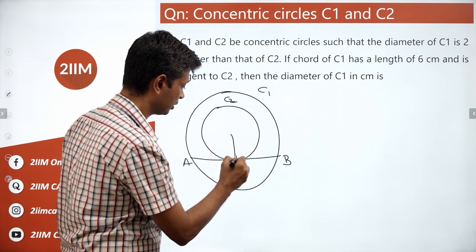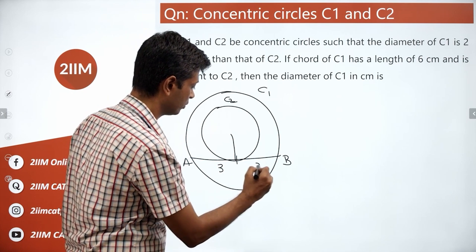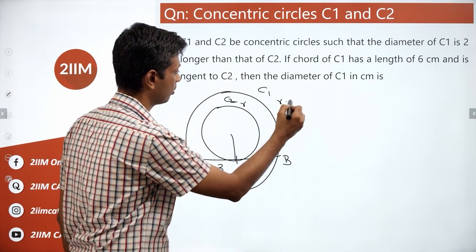The point of tangent C will be perpendicular. It's concentric, this is 3, this is 3, this is radius, this is radius plus 1.